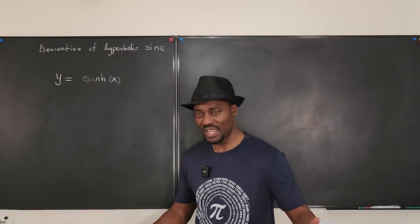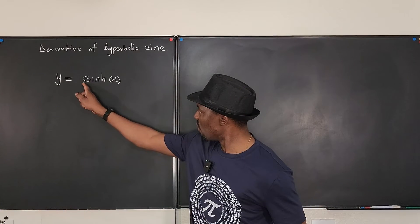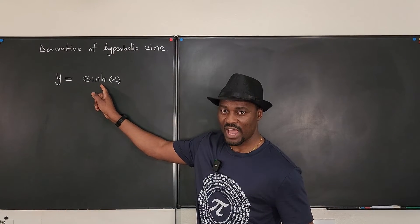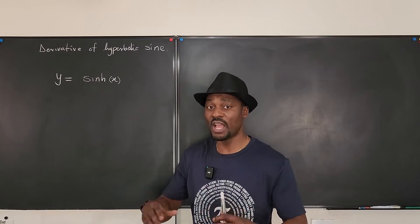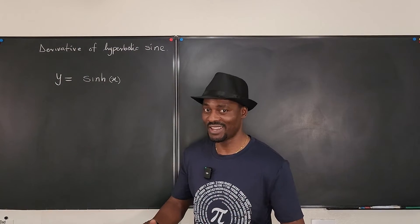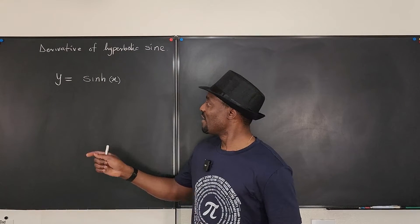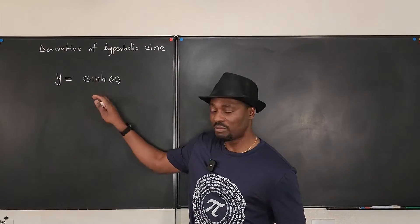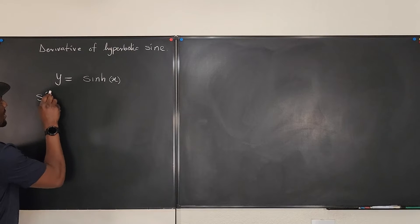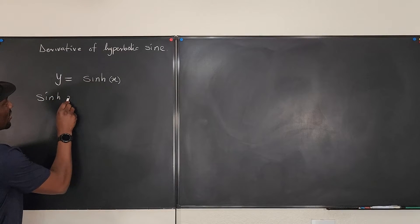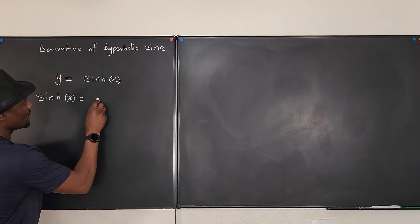The first thing I'm going to say is we need to know what this is. Hyperbolic sine—to avoid controversy, I'm going to just say hyperbolic sine instead of cinch or shine. The definition of hyperbolic sine is: sine hyperbolic of x is equal to e